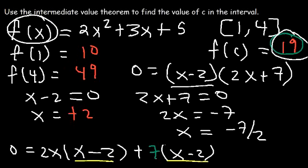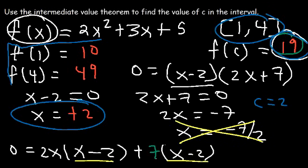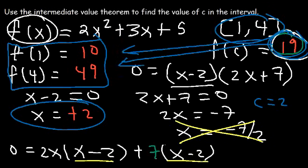One of these x values is the c value. Negative 7 over 2 is like negative 3.5, so that's not between 1 and 4. But 2 is in the interval 1 to 4, so c equals 2 and f(2) equals 19. Make sure you find f(1) and f(4) first, confirm that f(c) is between those y values, then replace f(x) with 19, solve for x, and find the value in the interval — that value is your c.